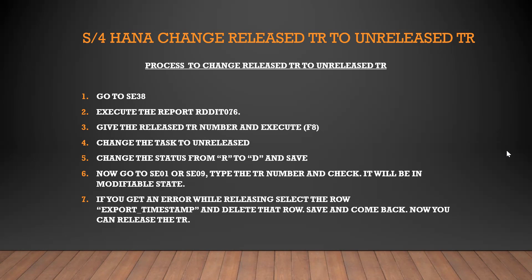Change the task to unreleased — you need to change the status from R to D and save. R means Released, D means Modifiable. Then go to SE01 or SE09, type the TR number and check — it will now be in modifiable state, changed back from released state.